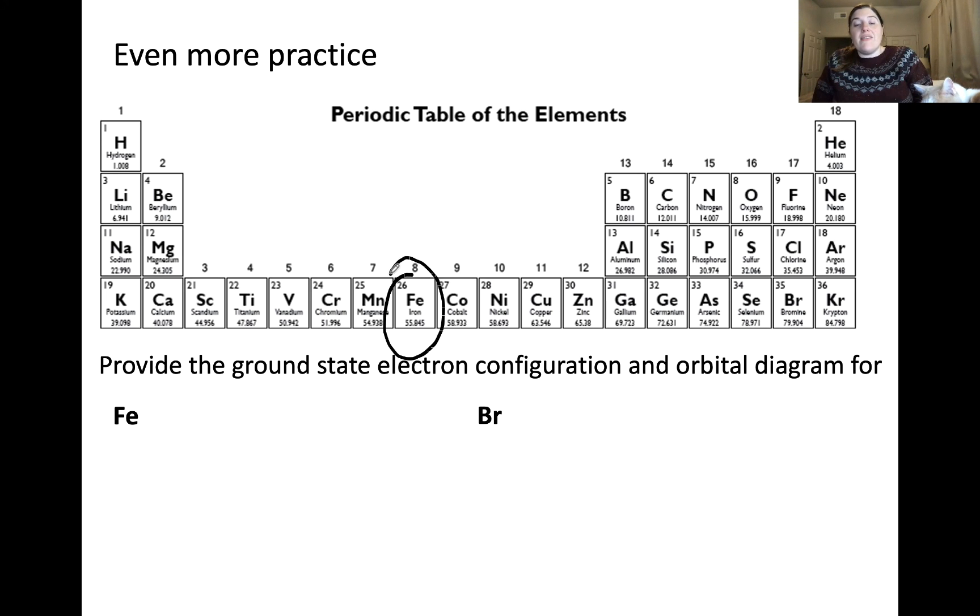Let's start with iron. So iron has 26 electrons. I'm going to use the nearest noble gas shortcut, which would be argon. So I'm going to start with argon. And now to know which row I'm in, remember, 1, 2, 3, 4, I'm in the 4, starting after argon, in the 4s. 4s2, and remember, now I'm in the 3d, 1, 2, 3, 4, 5, 6, 3d6.